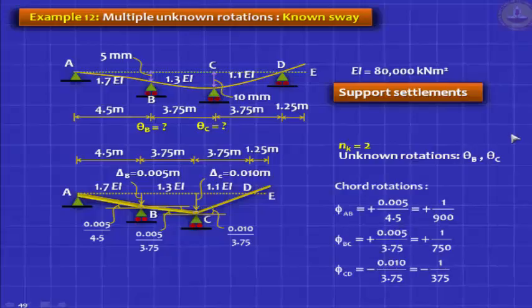Your chord rotations have no units because it is meters divided by meter. It is actually radian. So phi AB is 1 by 900, phi BC is plus 1 by 750, phi CD is minus 1 by 375.